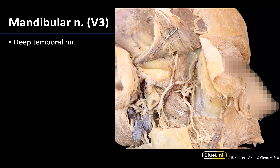The deep temporal nerves are small — very small — branches of V3 anterior division that are going to be variable both in how many branches there are as well as how they distribute. You can see one pretty nicely here, close to the posterior deep temporal artery, heading towards the deep surface of the temporalis muscle, which has been reflected in this dissection. There can be multiple branches of the deep temporal nerves heading to the expanse of the temporalis muscle.